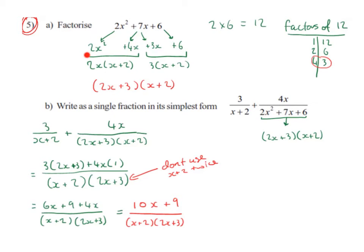What we do is bring down the 2x squared and the plus 6. Then we multiply 2 by 6 to get 12. We list out the factors of 12: they are 1 by 12, 2 by 6, and 4 by 3.